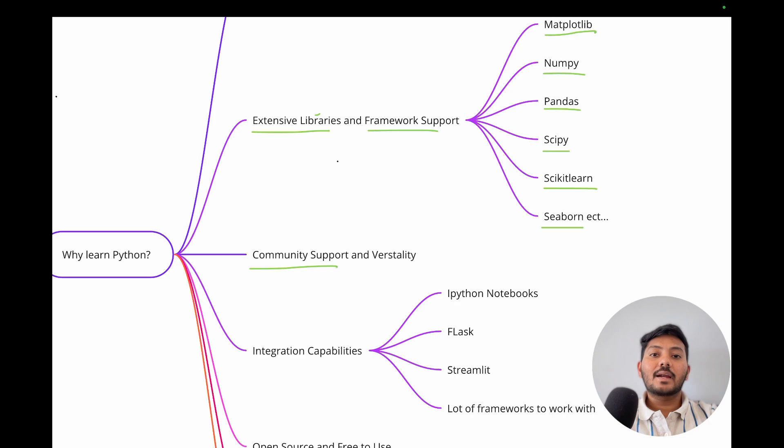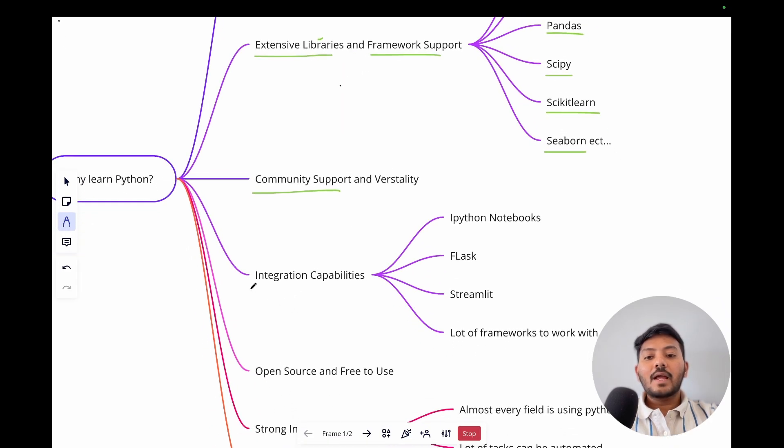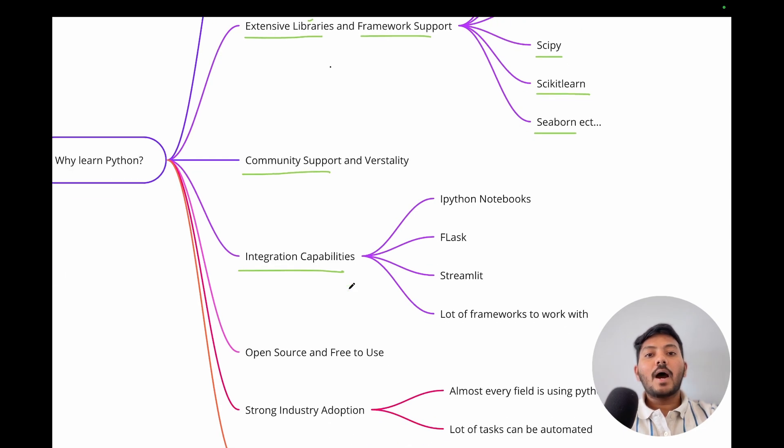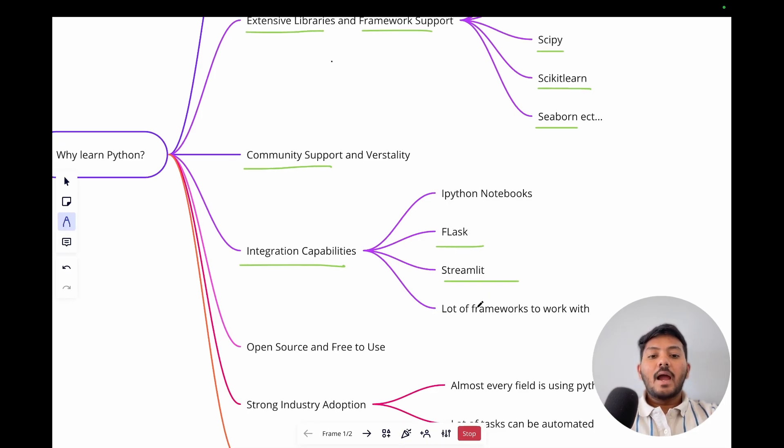Python has huge integration capabilities. Based on Python, we have other applications like Flask and Streamlit which are used for deployment, even Kubernetes and Docker are based on Python. We have a lot of frameworks to work with, and one of the famous frameworks is IPython notebooks, which are interactive Python notebooks. We will understand IPython notebooks in detail as we progress through this course because we use that a lot in machine learning and data science.